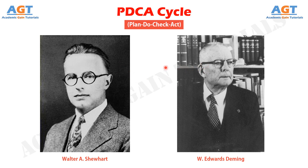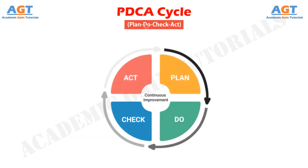Now let's concentrate on understanding the PDCA cycle in detail. PDCA cycle is an iterative process for continually improving products, people, and services. It became an integral part of what is known today as lean management. The Plan-Do-Check-Act model includes solutions testing, analyzing results, and improving the process.